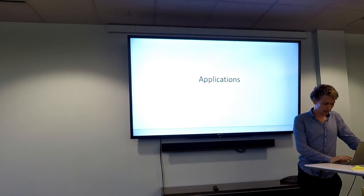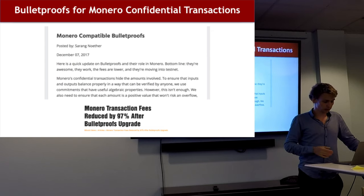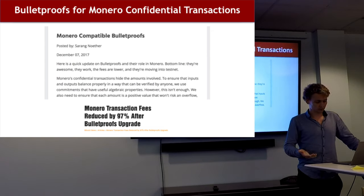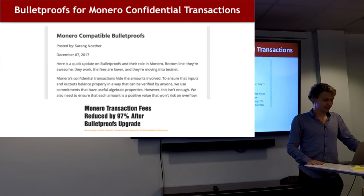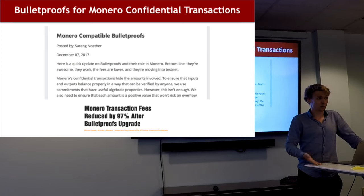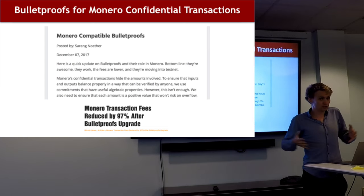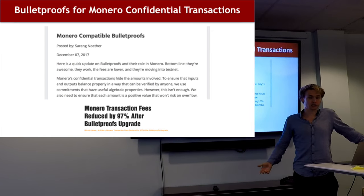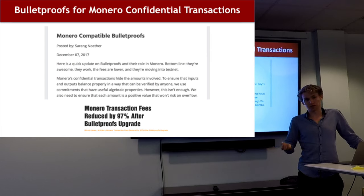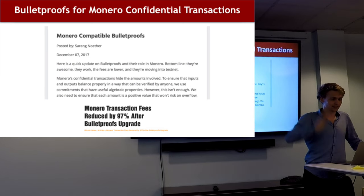Bulletproofs got implemented in Monero, which was very cool. Transaction fees dropped by 97 percent — the transaction sizes dropped by a factor of about 10, which put transactions well under the block size limit, meaning there was no more competition to get into a block, so fees dropped to almost zero. That's why the fees dropped so dramatically.